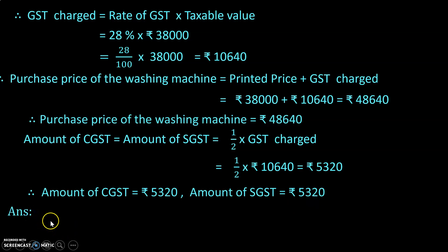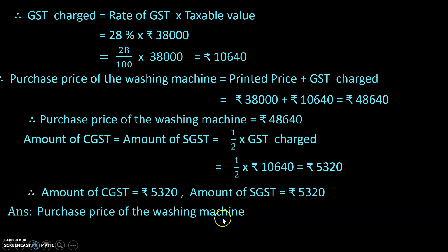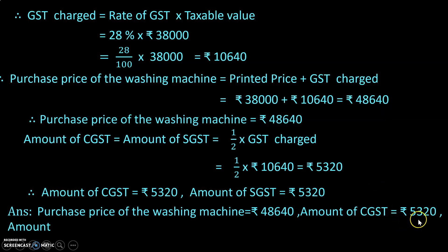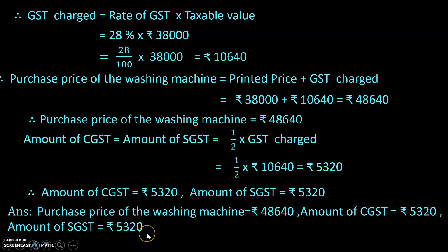The final answer: the purchase price of the washing machine is ₹48,640. Amount of CGST is ₹5,320 and amount of SGST is also ₹5,320. Hope the solution is clear to you students. That's all for the day, thank you.